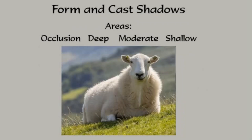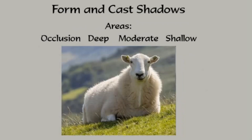Both form shadows and cast shadows are made up of variations of values. We can learn to read those values if we divide them into four areas of shadow — four kinds of shadow, maybe four kinds of form and cast shadow. The occlusion shadow, which is the darkest, would be this area right in here on this image, where one image is touching another, being squeezed out. That's going to be the darkest part of any shadow.